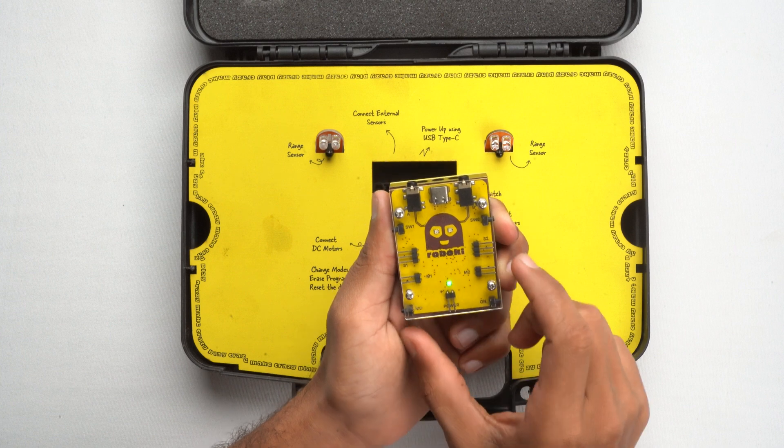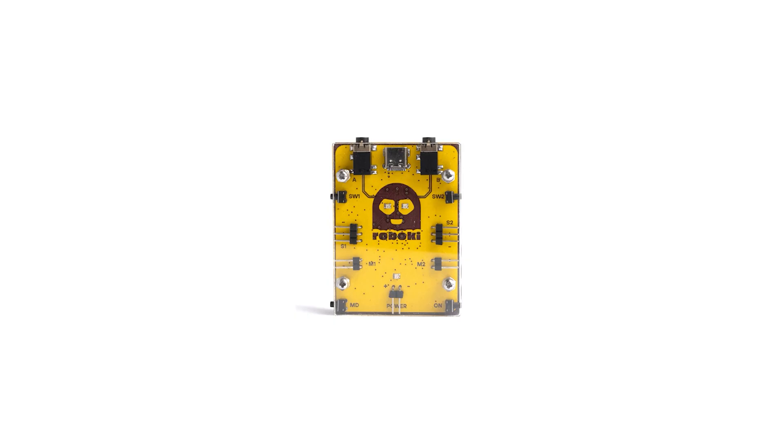Next on my left, we have another button called MD button. This button is super useful. It lets you change the modes on the RoboKey. Plus, if you ever need to erase the program or reset the device, you just need to press this button. Handy right?